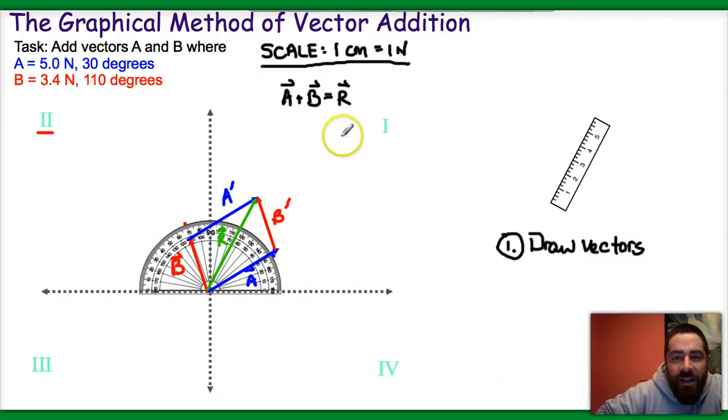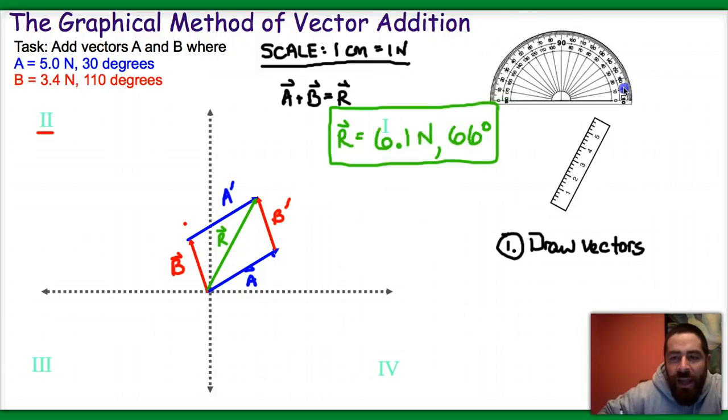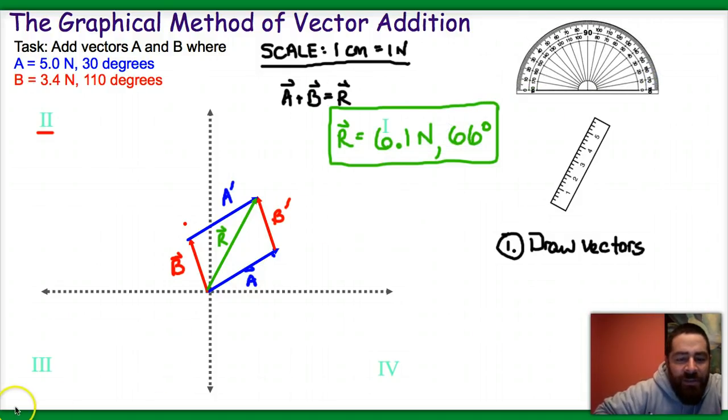So I'm going to say then that my resultant is equal to 6.1 Newtons, 66 degrees. And that would be my final answer for full credit, because it expresses the resultant in both magnitude and direction. That's basically the graphical method of vector addition.